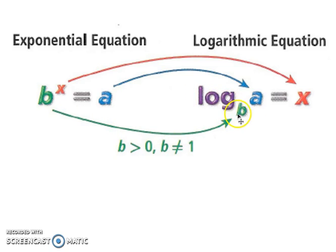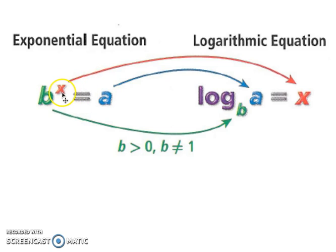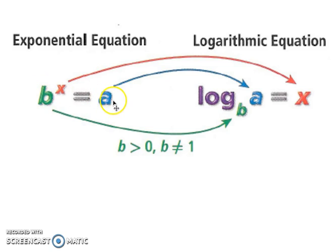We're going to put a log in front, and now we're going to look at our exponent and what it equals. To make it a logarithmic equation, we're simply going to switch whatever you have as your exponent with whatever you have as your value that it equals. So if exponential is b to the x equals a, your logarithmic would be log base b of a equals x.